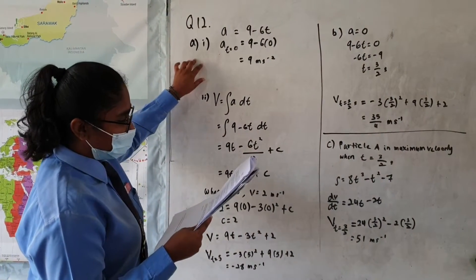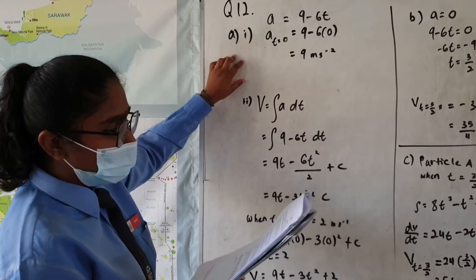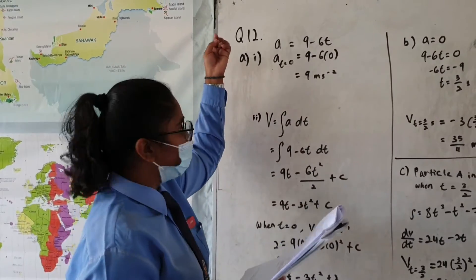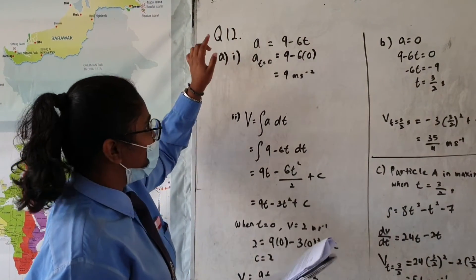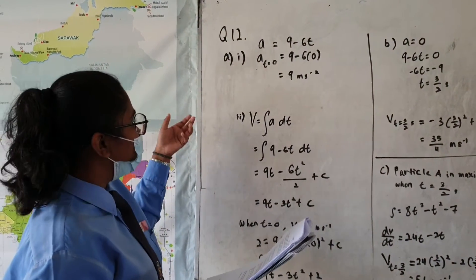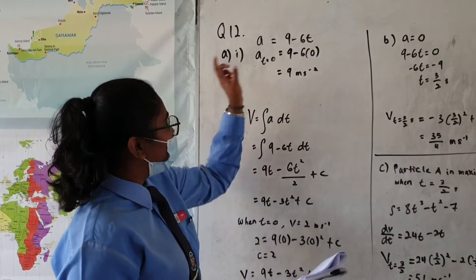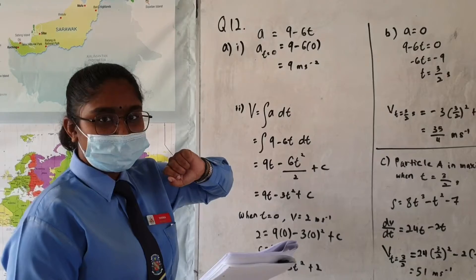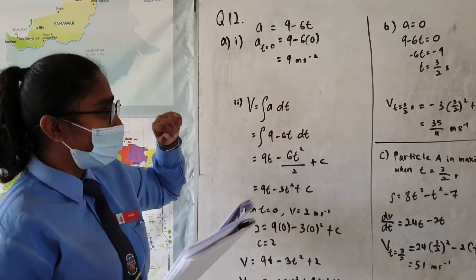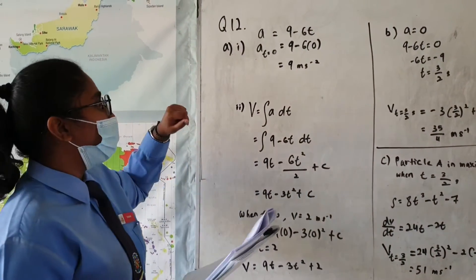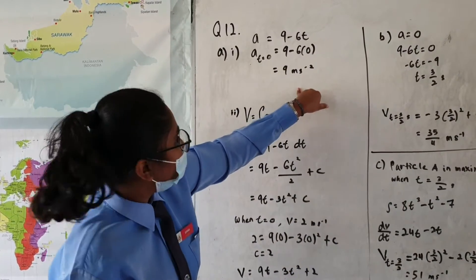For A1, find the initial acceleration in meters per second squared of particle A. In the question, they already give us a equals 9 minus 6t. For initial acceleration, the time will be zero — the keyword is 'initial', so initial t is always zero. When you substitute t equals zero, you will get 9 meters per second squared.